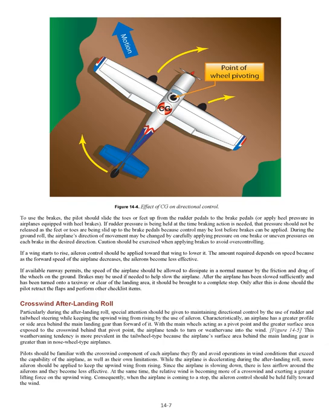In general, this combination of events is eliminated by landing straight and avoiding turns at higher than normal running speed. To use the brakes, the pilot should slide the toes or feet up from the rudder pedals to the brake pedals, or apply heel pressure in airplanes equipped with heel brakes. If rudder pressure is being held at the time braking action is needed, that pressure should not be released as the feet or toes are being slid up to the brake pedals, because control may be lost before brakes can be applied. During the ground roll, the airplane's direction of movement may be changed by carefully applying pressure on one brake or uneven pressures on each brake in the desired direction. Caution should be exercised when applying brakes to avoid over-controlling. If a wing starts to rise, aileron control should be applied toward that wing to lower it. If available runway permits, the speed of the airplane should be allowed to dissipate in a normal manner by the friction and drag of the wheels on the ground. After the airplane has been slowed sufficiently and turned onto a taxiway or clear of the landing area, it should be brought to a complete stop before retracting flaps or performing other checklist items.